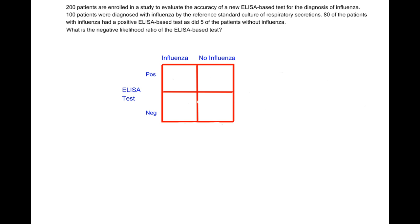Well, first we need to fill in our 2x2 table. There are 200 total patients in this study. 100 of them have influenza, so 100 have to not have influenza. 80 of the patients with influenza had a positive ELISA-based test, so 80 will go in this box, as did 5 of the patients without influenza, so 5 will go in that box. And then everything else just has to add up, so we'll have 95 here and we'll have 20 here.